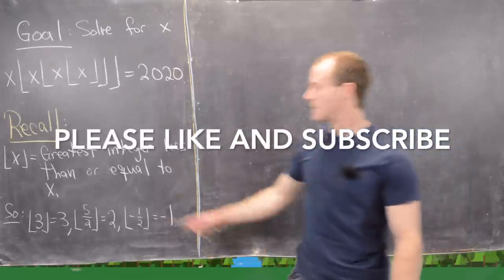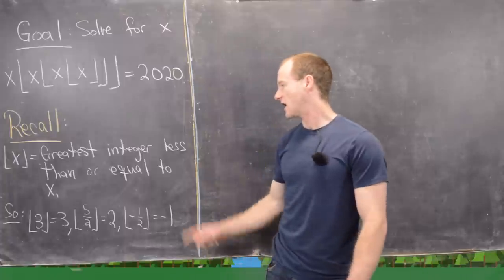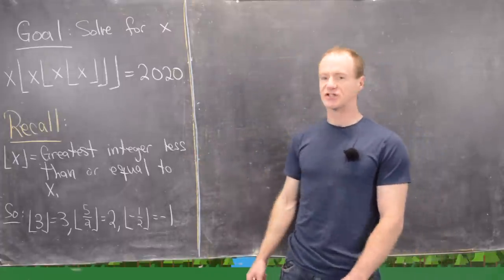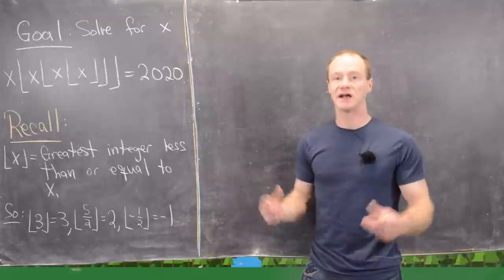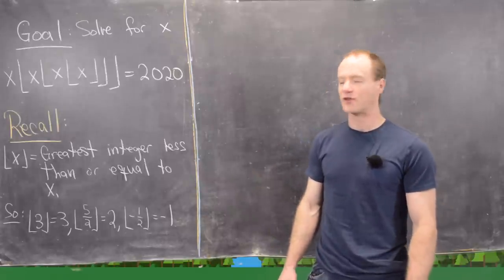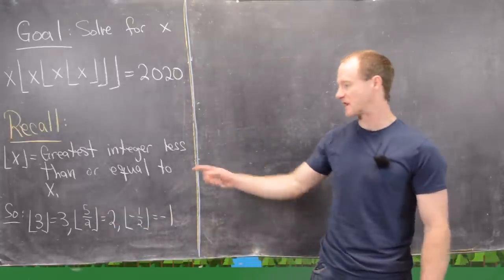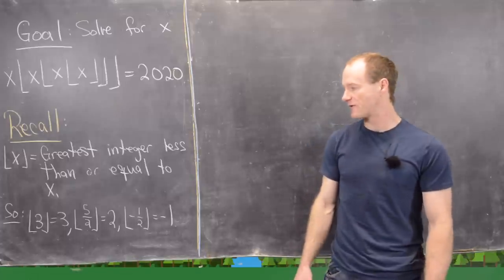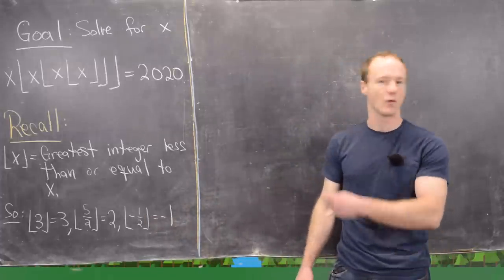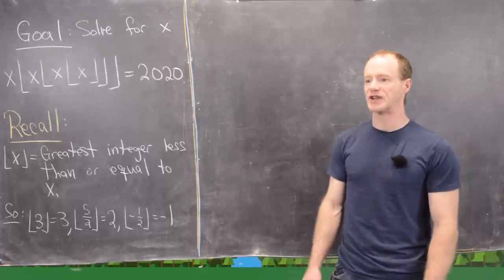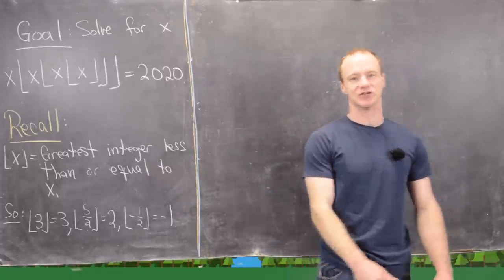First of all, I want to recall that the floor of x is also called the greatest integer function — it's the greatest integer less than or equal to x. For example, the floor of 3 is 3; the floor of 5/2 is 2 because 5/2 is 2.5 and the greatest integer smaller than 2.5 is 2; and the floor of -1/2 is -1. I like to think of the floor function as an elevator down — if you're between two integers, it takes you down to the next integer.